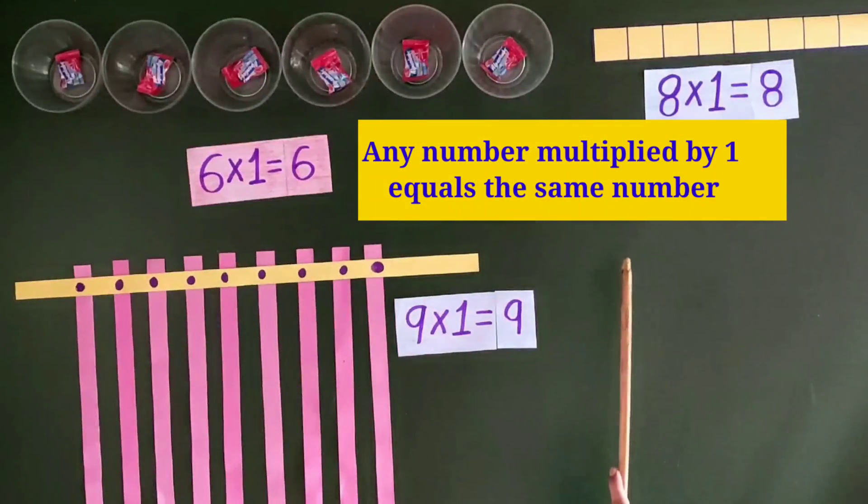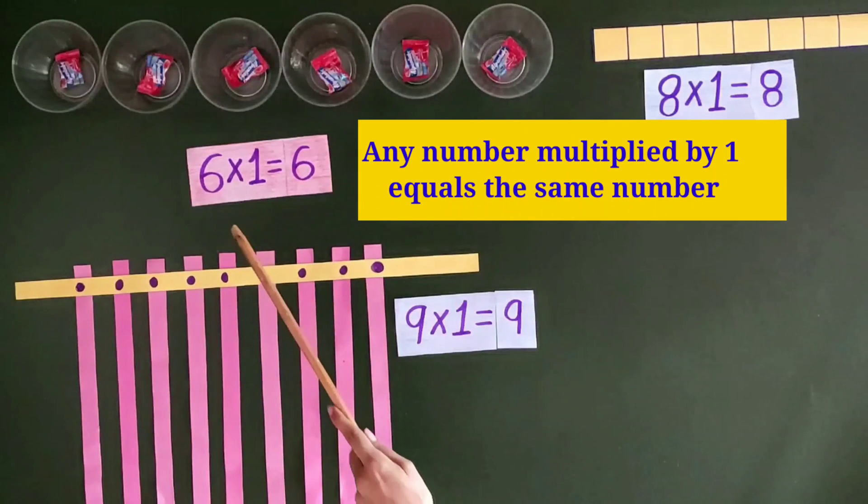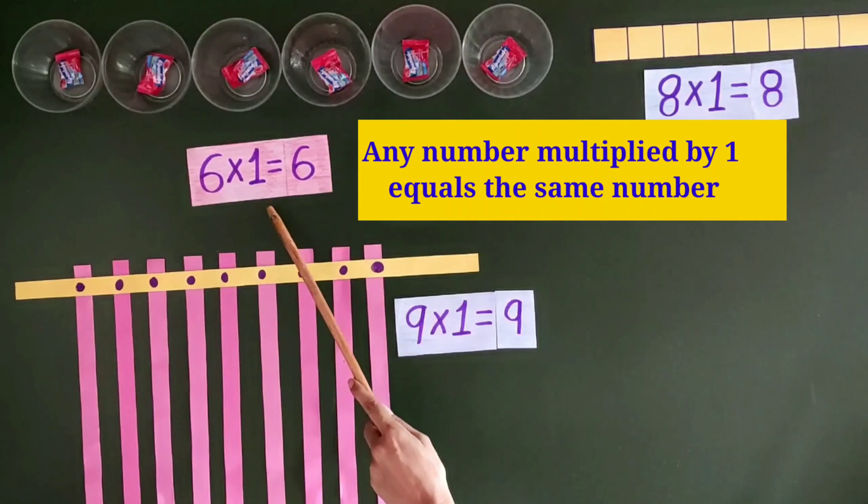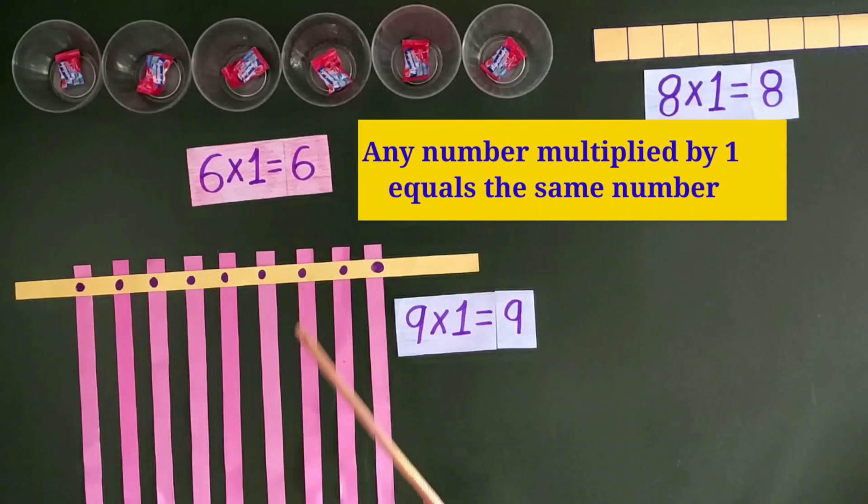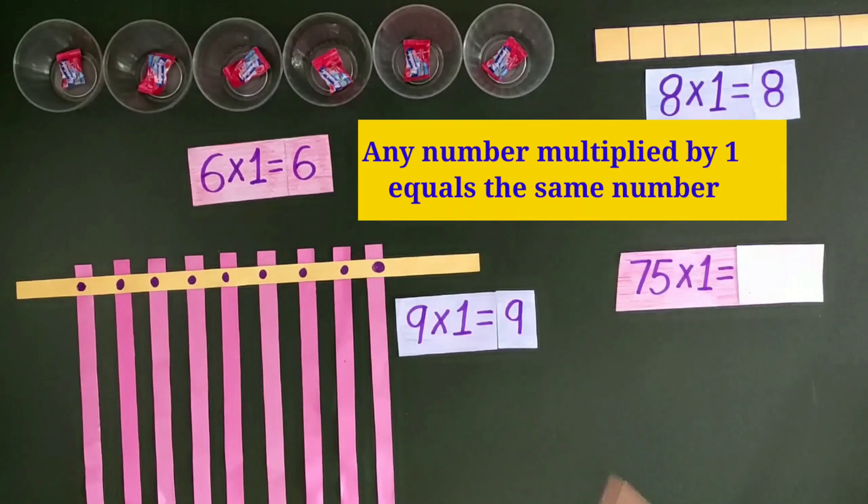So students we have learned that any number multiplied by 1 equals the same number. And that way 75 multiplied by 1, what will be the answer? As we know that a number multiplied by 1 equals the same number.